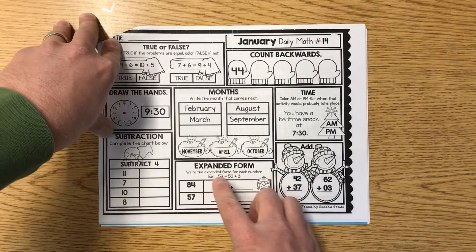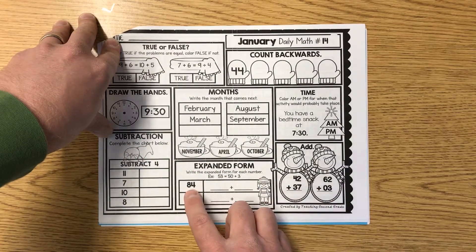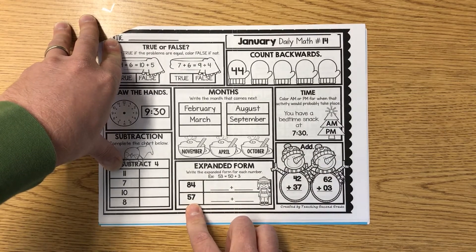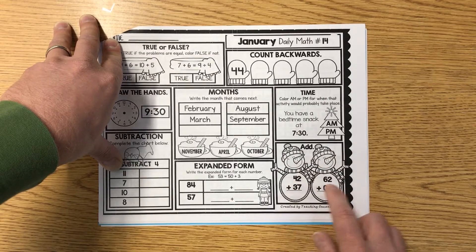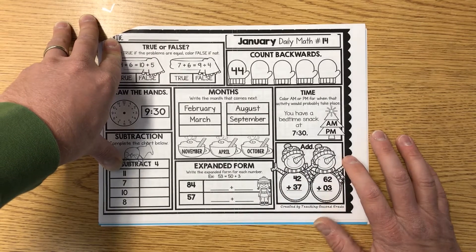Expanded form. Write the expanded form for each number. Eighty, four. Fifty, seven. And finally, add your two-digit numbers, 42 plus 37, 62 plus three.